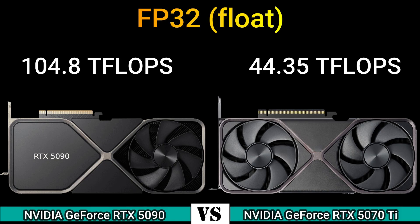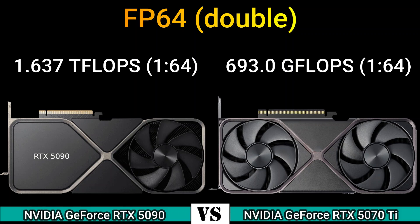FP32 float: 104.8 TFLOPS and 44.35 TFLOPS. FP64 double: 1637 GFLOPS at 1:64 and 693.0 GFLOPS at 1:64.